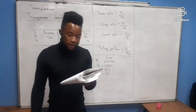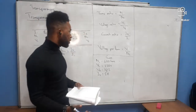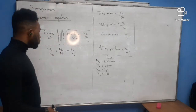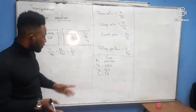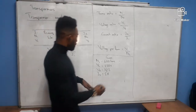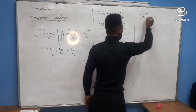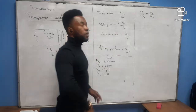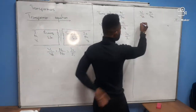Part A asks for the number of turns on the secondary side. To find N2, use the transformer equation. Since we're given V1 and V2, we can use: V1 over V2 equals N1 over N2. Cross-multiplying to make N2 the subject: N2 = (V2 × N1) / V1.